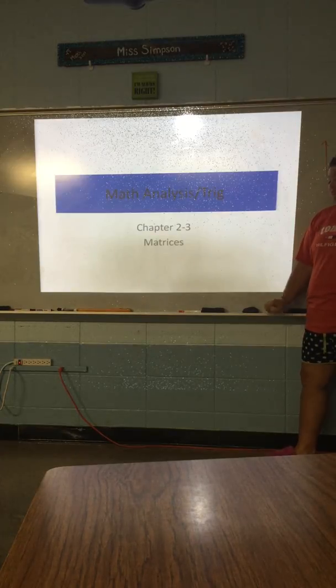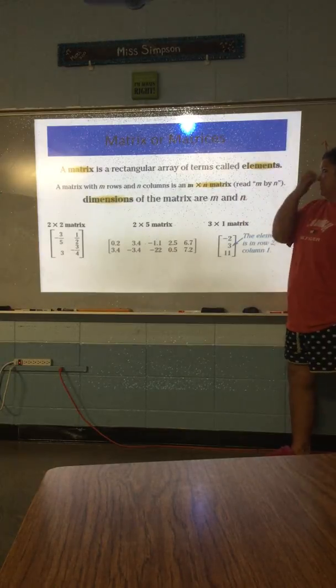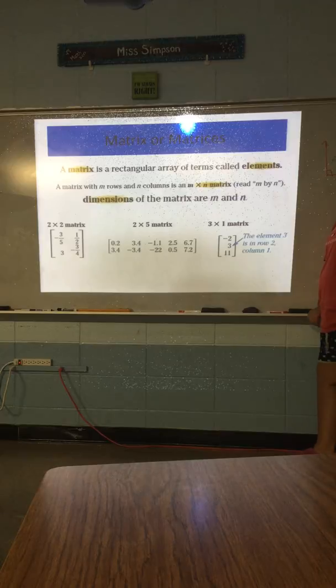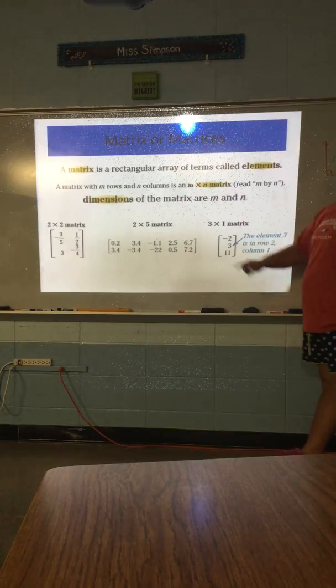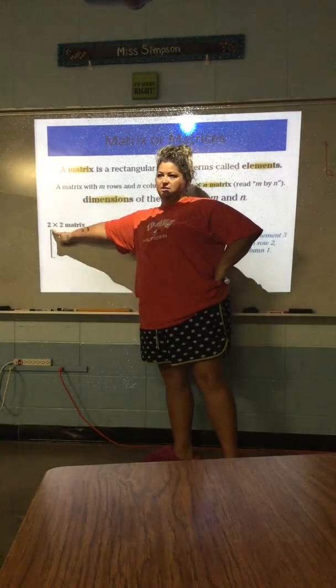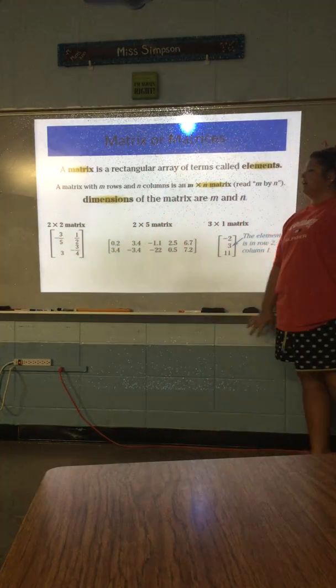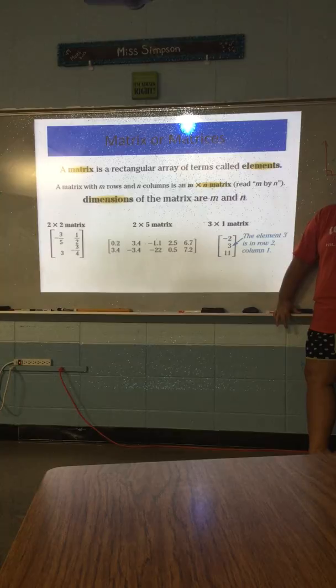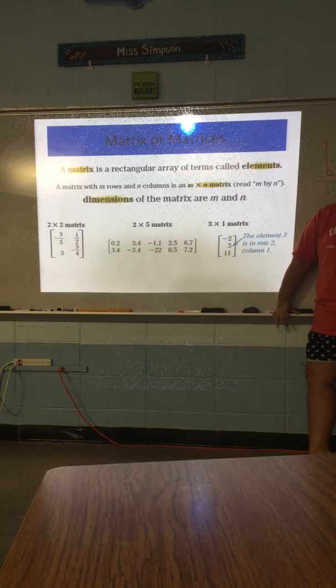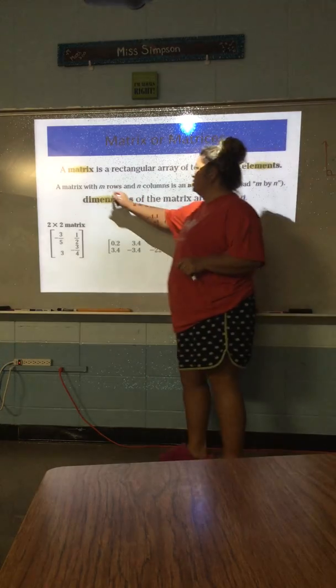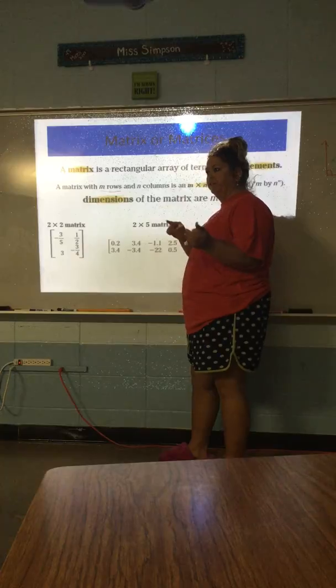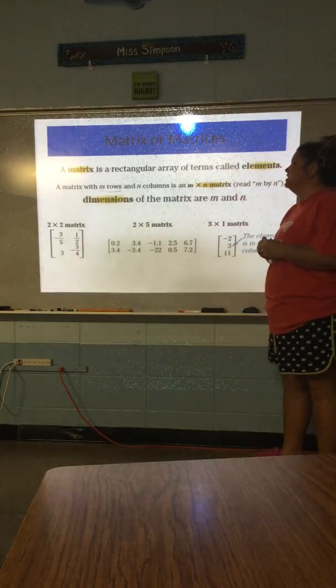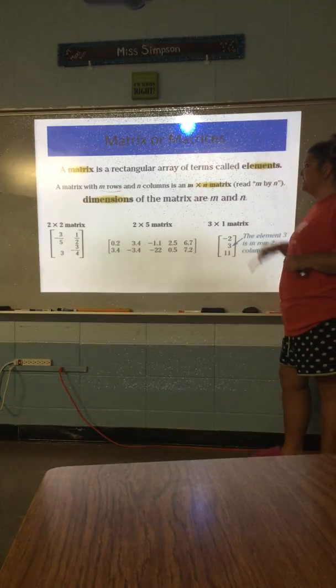Alright, so matrices are another way that we can solve systems of equations, okay? A matrix is going to look like this. It's going to be like a box with brackets. All of the numbers and stuff inside of it, we're going to refer to as elements. All of these will have dimensions, okay? M and N. M is going to stand for rows, okay? And everybody knows that rows go left to right, right? Rows go left to right, and columns go up and down.